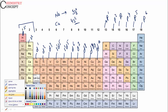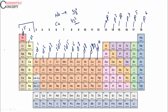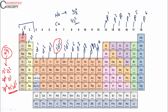Let's say we have an element with atomic number 24 and we need to locate it in the periodic table. We write its electronic configuration: 1s2, 2s2, 2p6, 3s2, 3p6, 4s1, 3d5. This is the S1D5 configuration. The last electron enters the d sub-shell, so it belongs to the d-block. And since it is S1D5, it belongs to group 6. This is chromium.